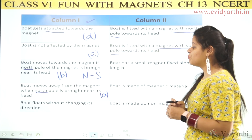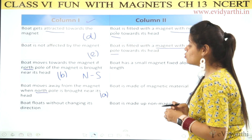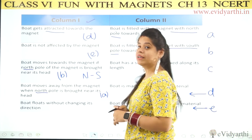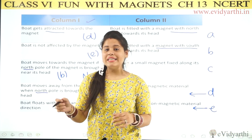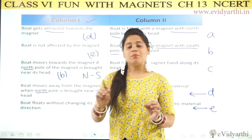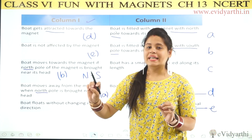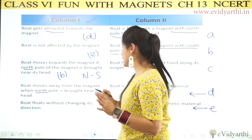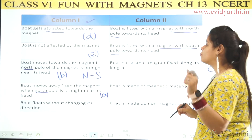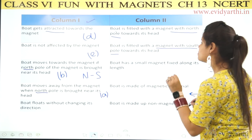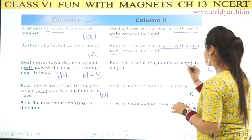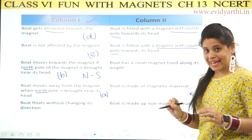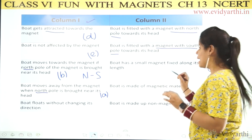Next effect: the boat floats without changing its direction when the magnet is moved around it. The possible reason is that the boat has a small magnet fixed along its length. So as the external magnet moves around, the boat follows along its length without changing orientation. The answer is C.